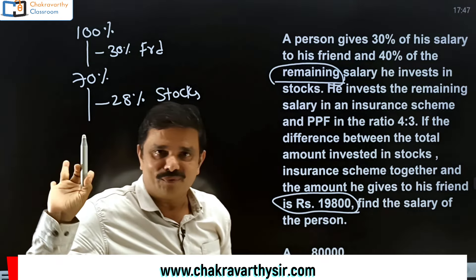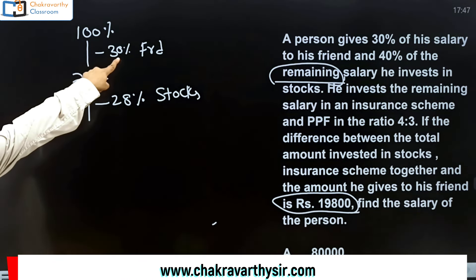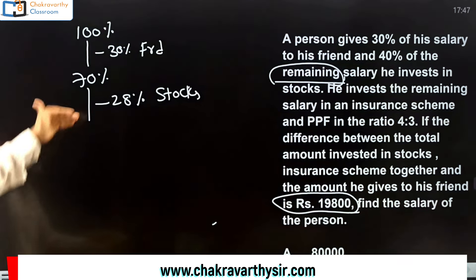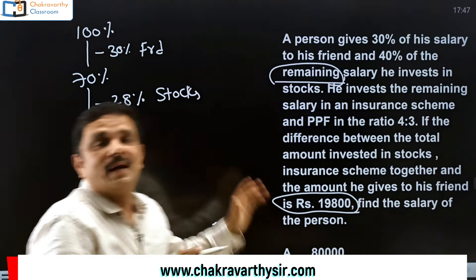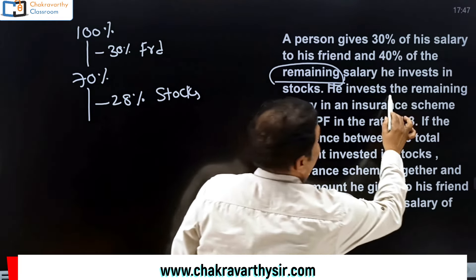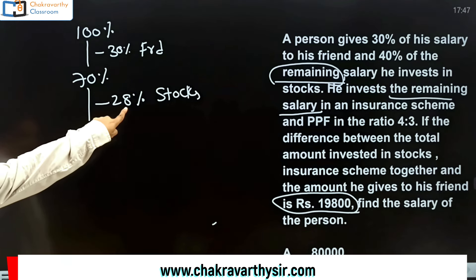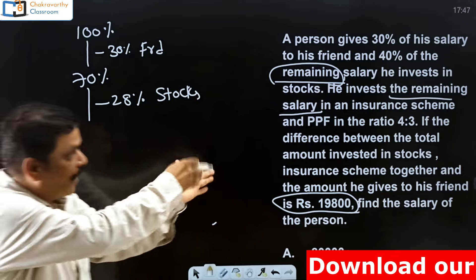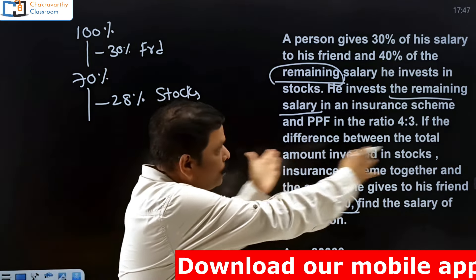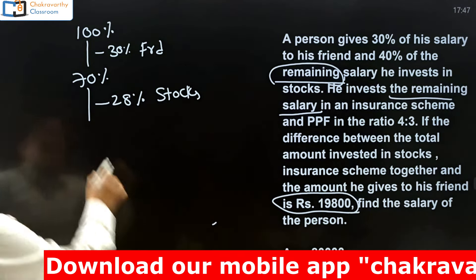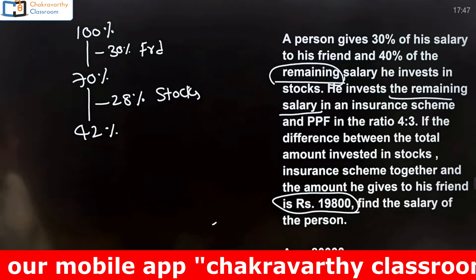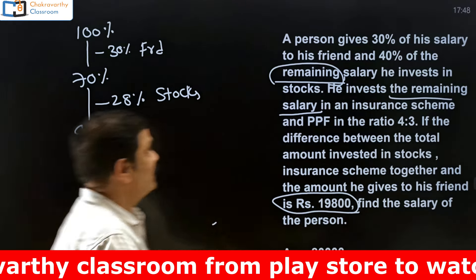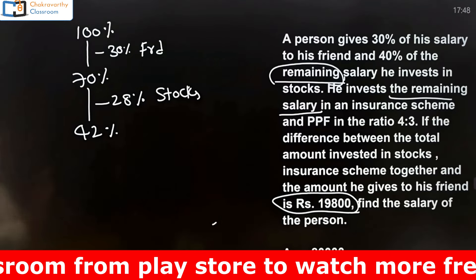Up to this extent, no confusion. Started with 100%, 30% to his friend, remaining is 70%. From the 70%, 40% gone means 28% gone. Now he invests the remaining salary — that means after investing 28% from the 70%, how much is remaining? 70 minus 28 means 42%. From this 42%, he had invested in two parts: one in insurance scheme and the other in PPF in the ratio of 4 is to 3.